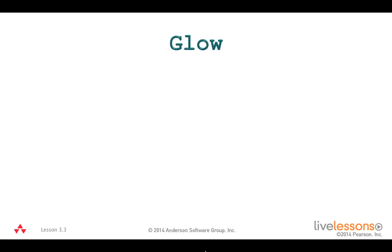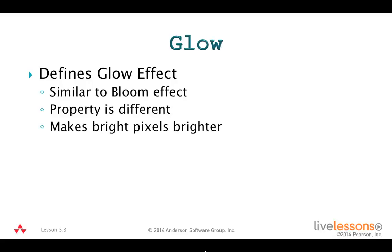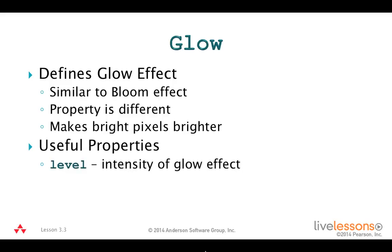The last effect in this lesson is Glow. A glow effect is similar to bloom except the controlling property works in reverse order — the more glow you apply, the brighter the pixels appear. The Level property is the intensity of the glow effect, a measure of how bright the pixel looks to the human eye. The range is 0 to 1 with a default of 0.3. A value of 0 means no pixels glow, and a maximum value of 1 means all pixels glow. The other property is input, used for chaining effects.